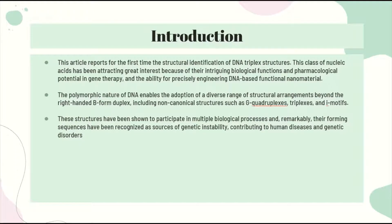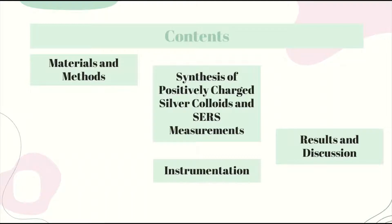To the best of our knowledge, only two articles from 1996 reported the acquisition of triplex SERS spectra, specifically from RNA triple helices observed on silver electrodes. However, the illustrated SERS data display spectral profiles with no actual resemblance to the characteristic vibrational patterns of nucleic acids. This incongruence was later elucidated by noting the striking correspondence of these anomalous spectra to the SERS of methyl viologen, a molecule commonly used in electrochemistry which has been indicated as the actual source of the intense SERS signal.